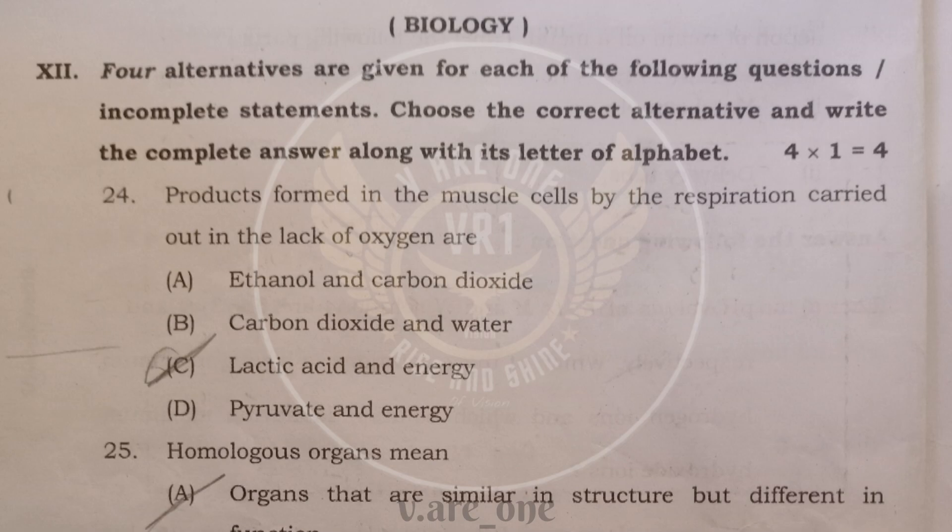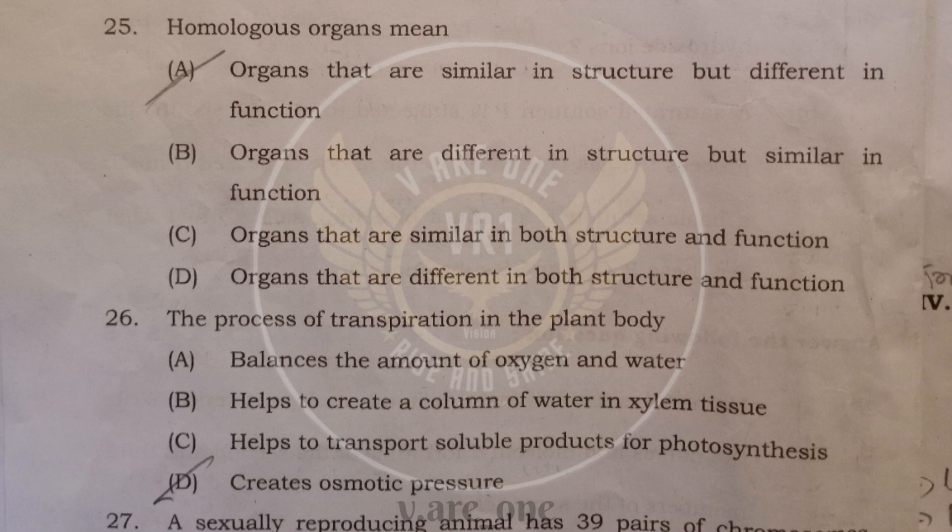Part C is biology. First MCQ. 24th question. Products formed in the muscle cells by the respiration carried out in the lack of oxygen are lactic acid and energy. 25th, homologous organs means organs that are similar in structure but different in function. Option A is answer.